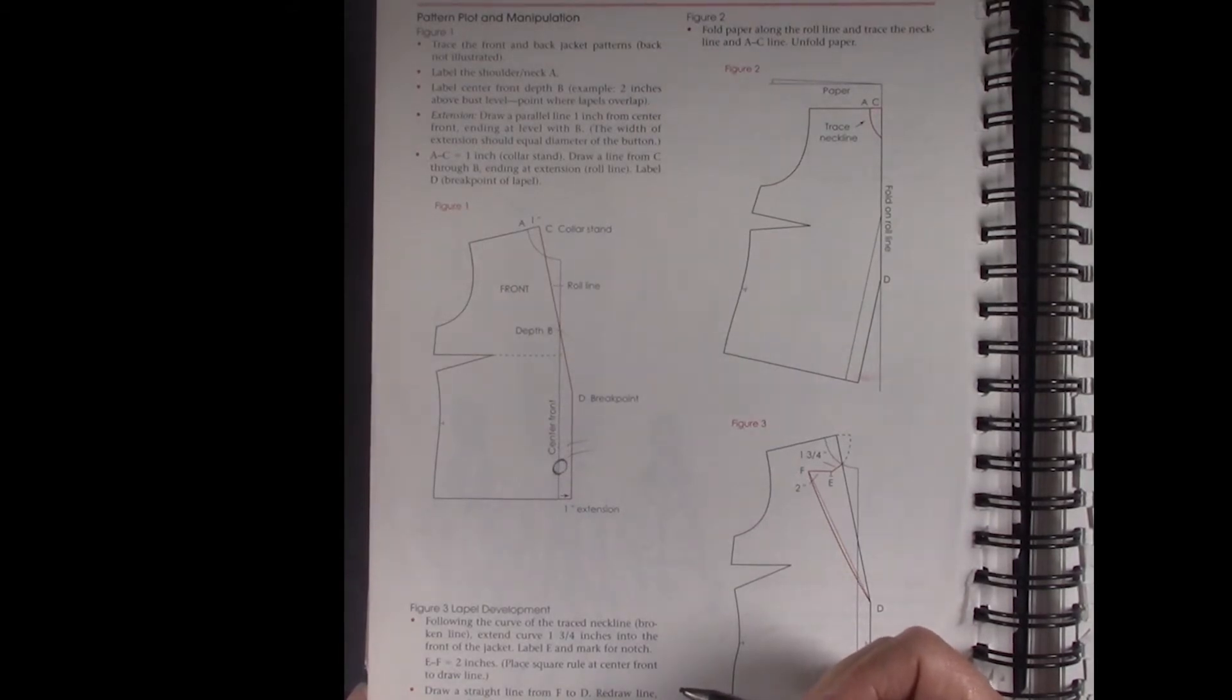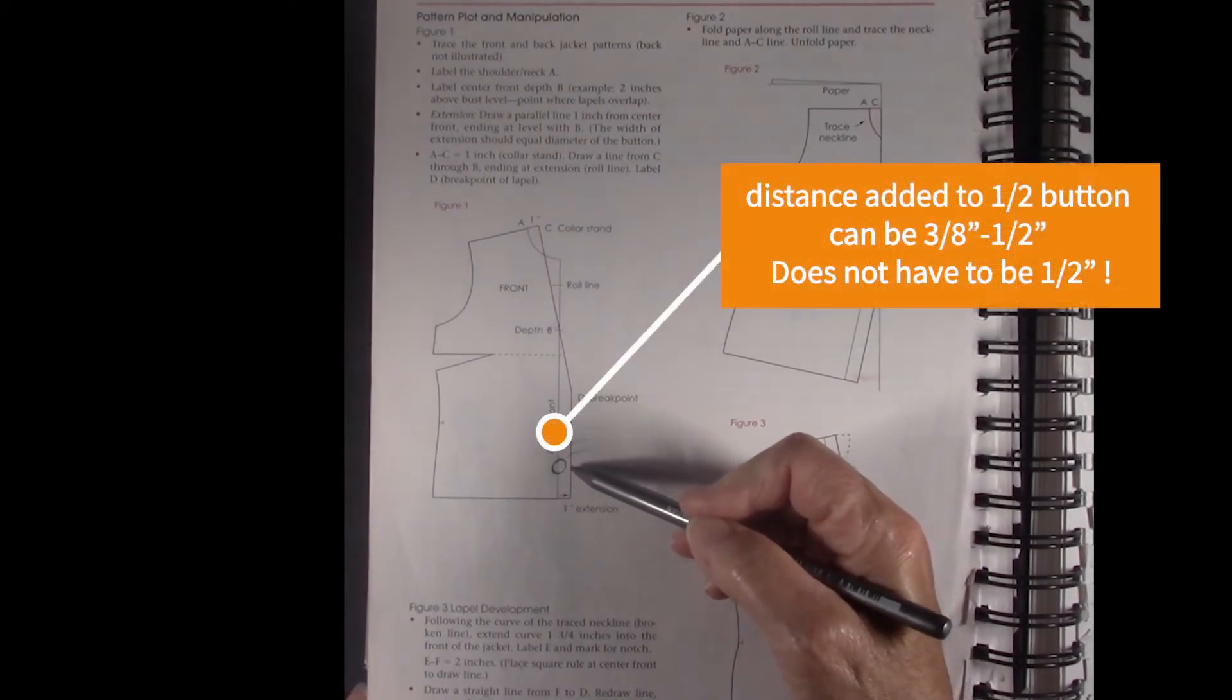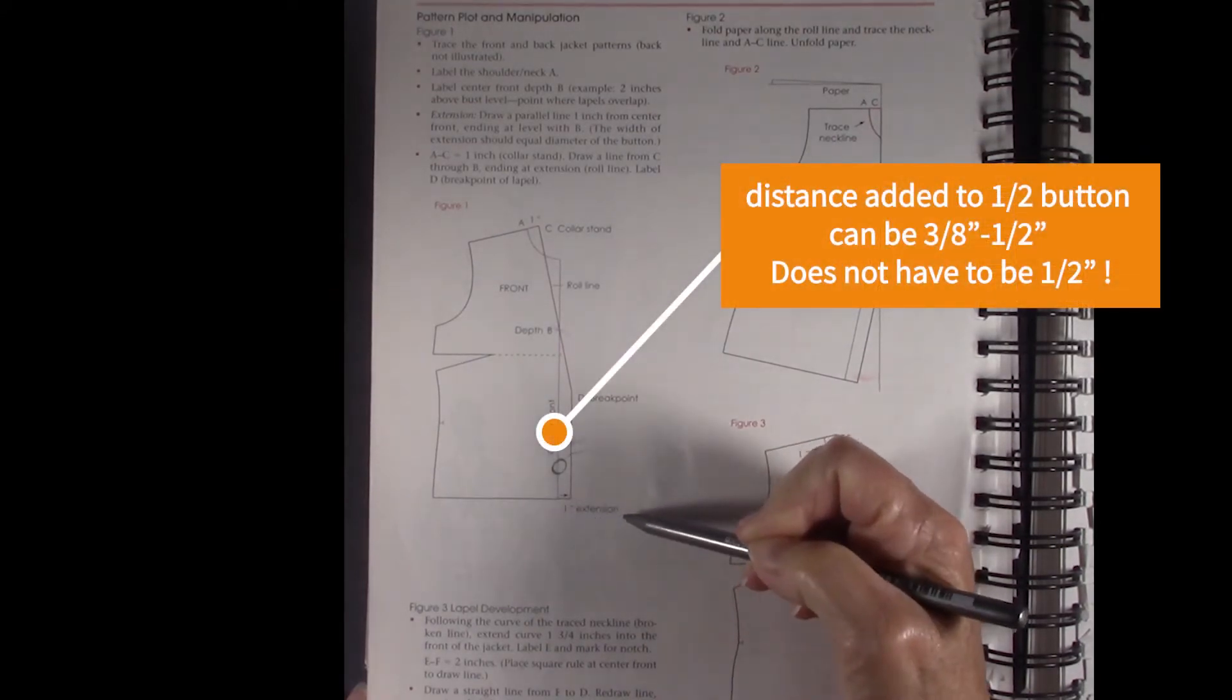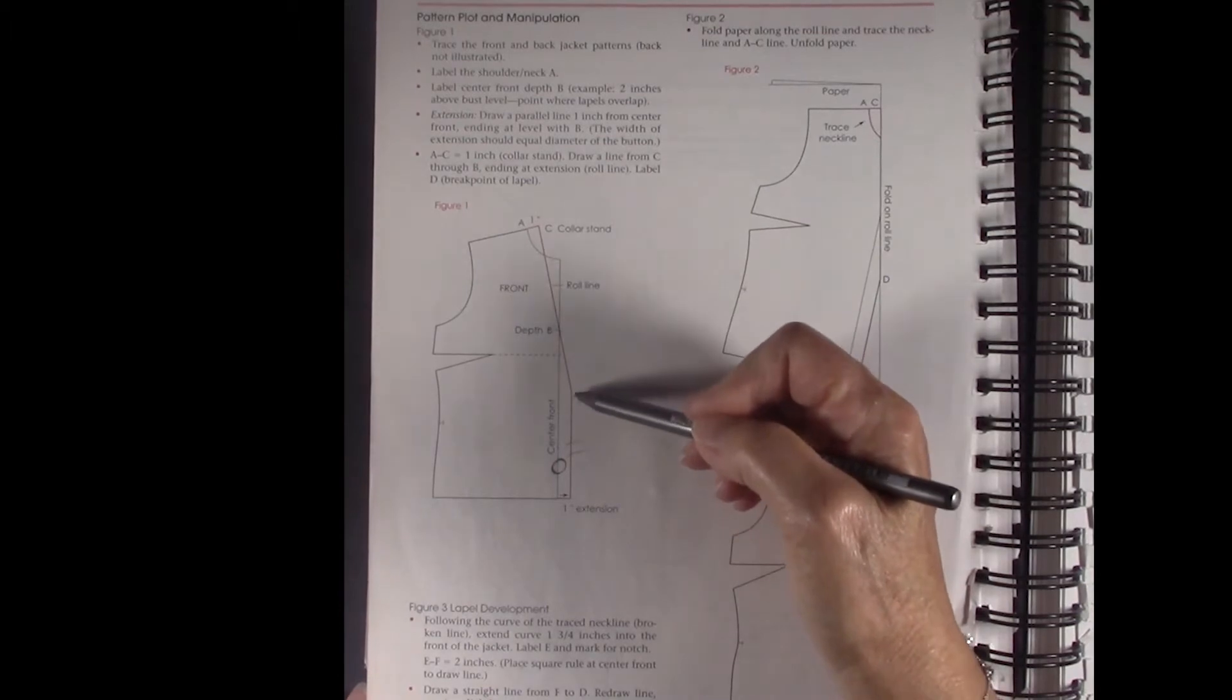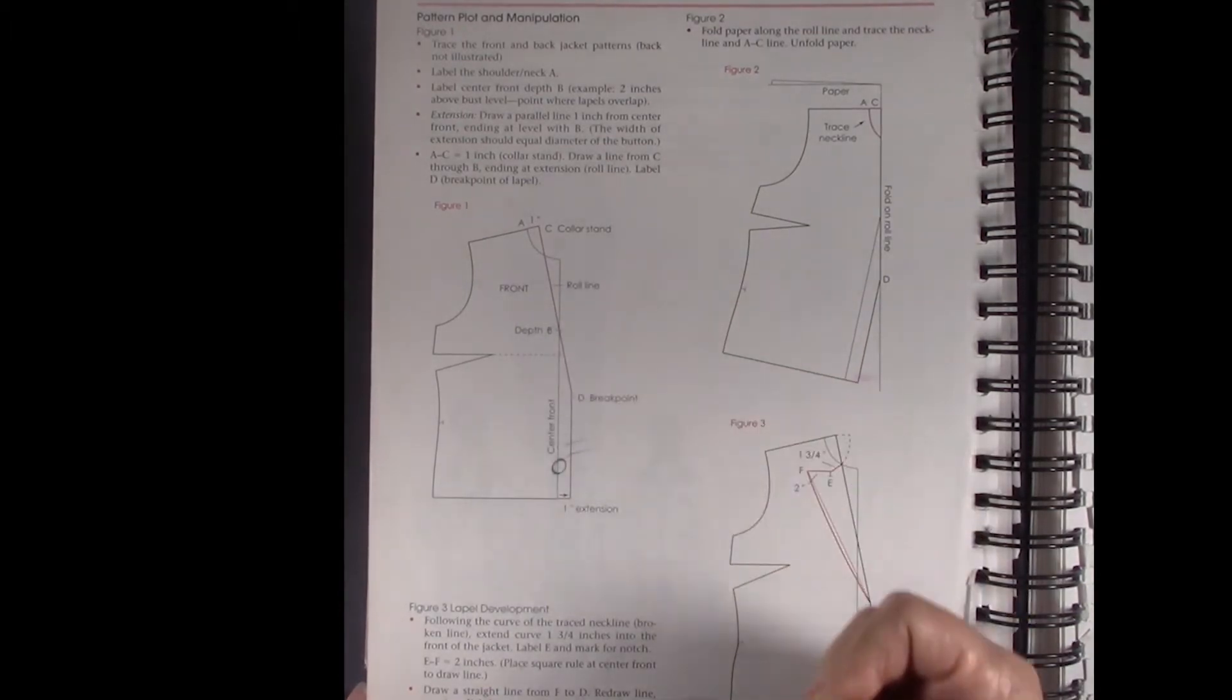Some drafters use a quarter. I actually always like a little bit more but again it's a preference but it has to be at least a half inch away. So half the button plus half inch over that will determine what your extension is. And then of course you have to determine your breakpoint and where you want the jacket to break and how deep you want the V.